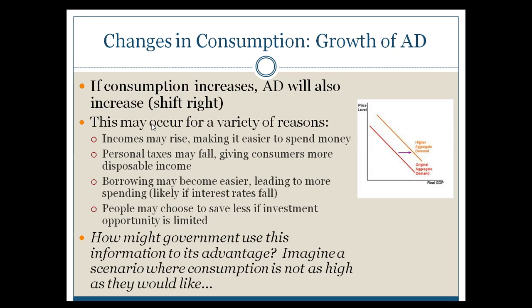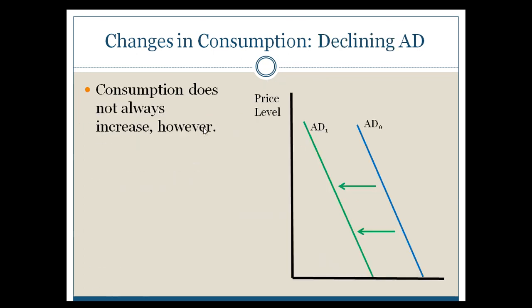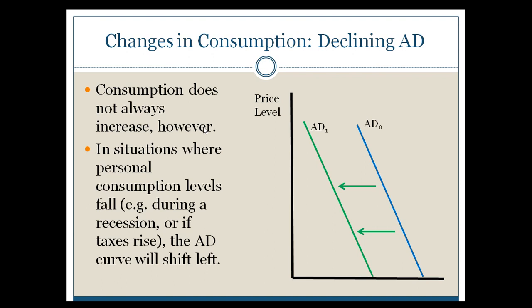Any of those things, if you were to reverse those factors, would lead to a decrease in aggregate demand. If you wanted to get aggregate demand lower, you would want consumers spending less money. If interest rates rise, they'd be discouraged from spending, and they may slow their consumption patterns.